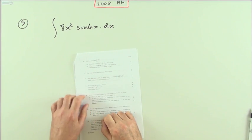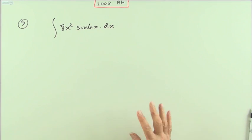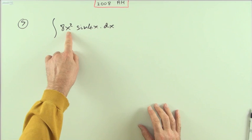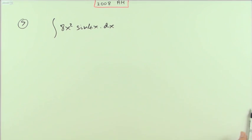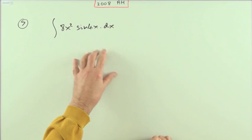Number seven, integration by parts, five marks. Nice and easy except you notice they've got an x squared, that means you're going to have to go through the process twice because you're wanting one of them to whittle away.